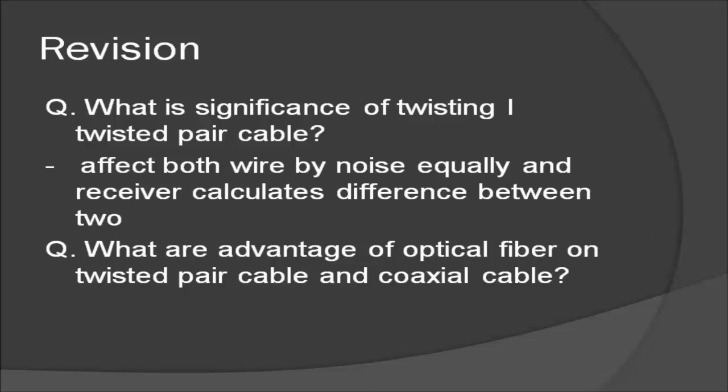What are the advantages of optical fiber over twisted pair cables and coaxial cables? The optical fiber cable has higher bandwidth, less signal attenuation, and immunity to electromagnetic interference.